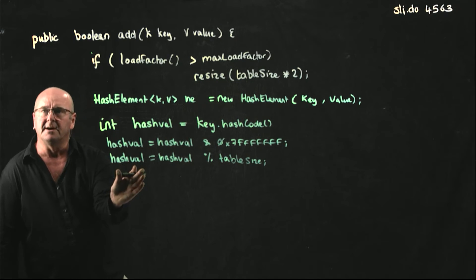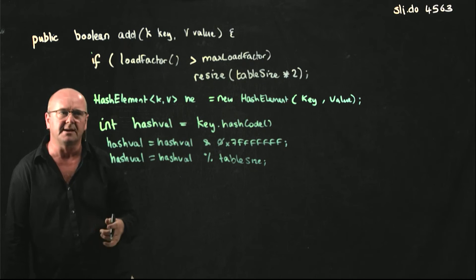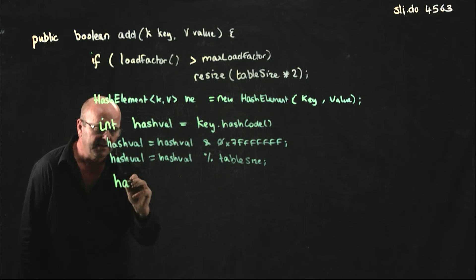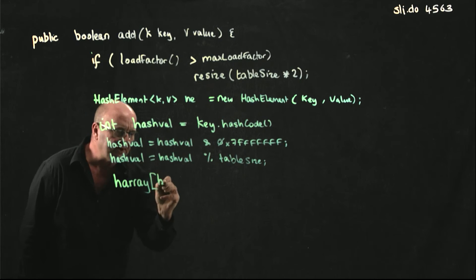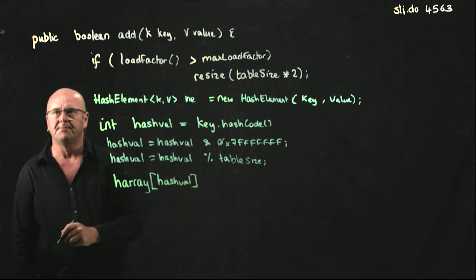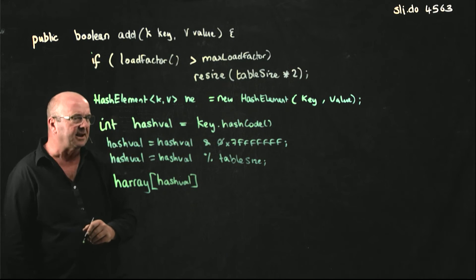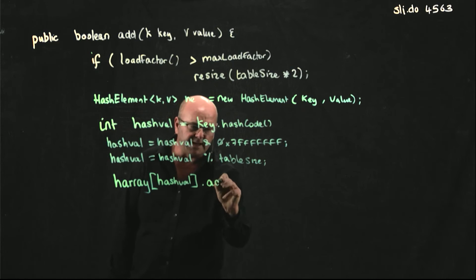So now, we've got our index, we've got our element to store in the index. So we just call our linked list. So we call our global array, hash array. We go to the index location, hash val. And so that's a linked list, because we've already initialized our linked list. And so we call the add method.